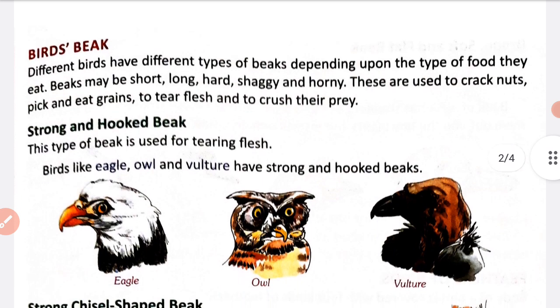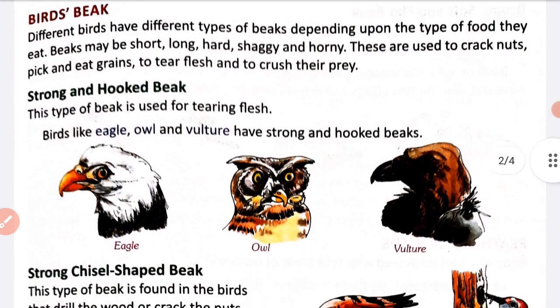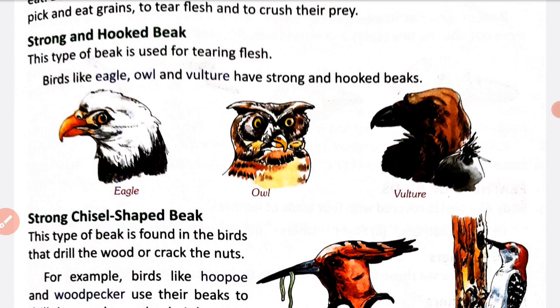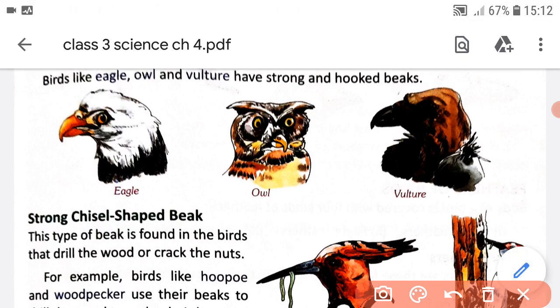Now our first topic is birds' beaks. Different birds have different types of beaks depending upon the type of food they eat. The first type of beak is the strong and hooked beak. This type of beak is used for tearing flesh. Eagle, owl, and vulture have a strong and hooked shaped beak. You can see in this picture - this is an eagle's beak, strong and hooked shaped.